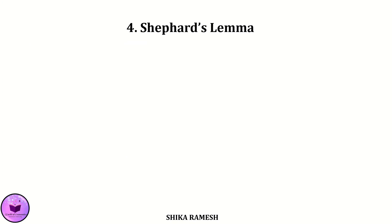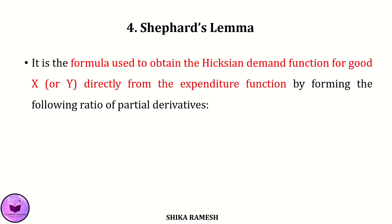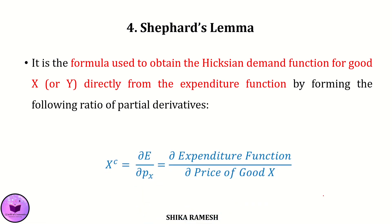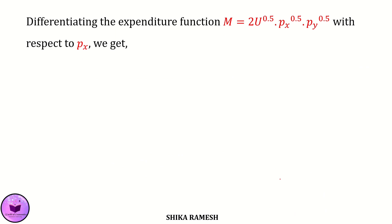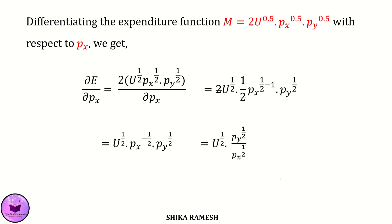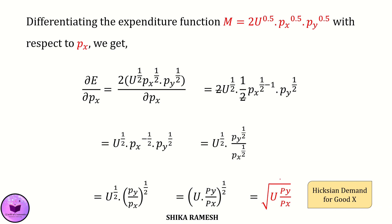The last property is Shepherd's Lemma. It is a formula used to obtain the Hicksian demand function for either good directly from the expenditure function via the partial derivative: the compensated demand for good x = ∂E/∂px. Differentiating the expenditure function with respect to px, we get √u × (py/px)^0.5, which is the Hicksian demand for good x. Similarly, differentiating with respect to py gives the Hicksian demand for good y.